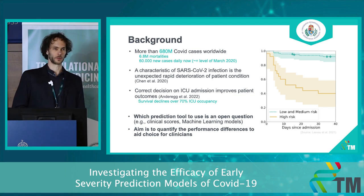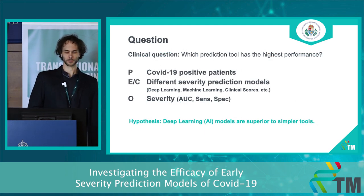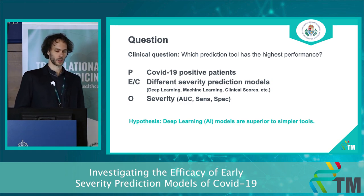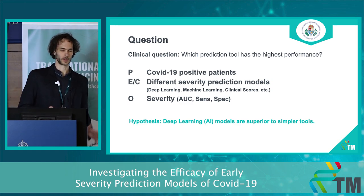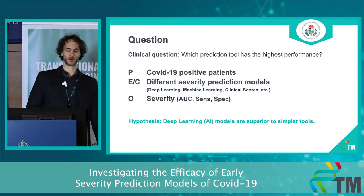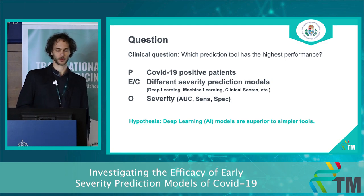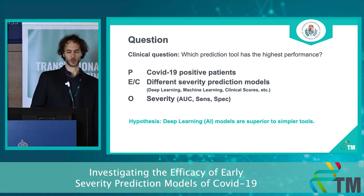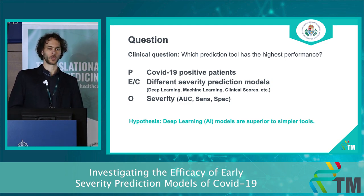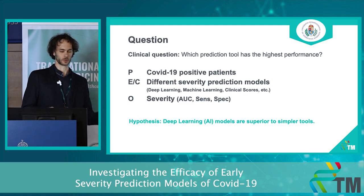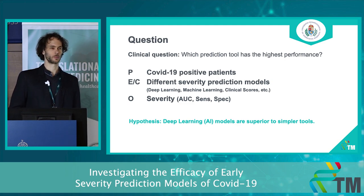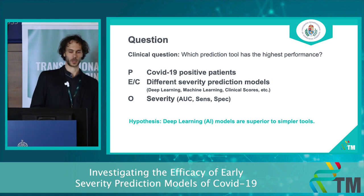The fundamental question is which prediction tool should we use, and our aim was to quantify the performance differences between the different available tools. We looked at COVID-19 positive patients, comparing prediction models across three main categories: deep learning or neural network AI models, other machine learning models, and clinical scores — the simpler models. The outcome was severity, measured using AUC, sensitivity, and specificity. Our initial hypothesis was that deep learning models are superior to simpler ones — and we'll see that may not exactly be the case.